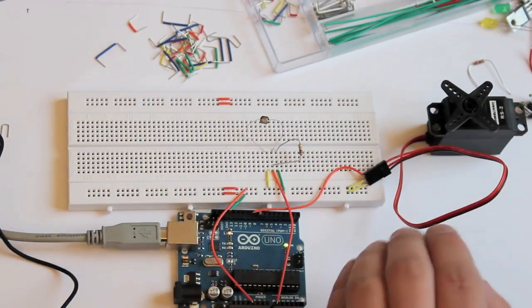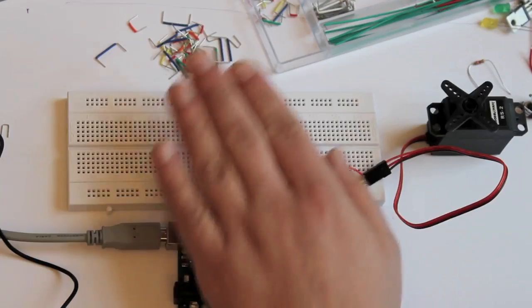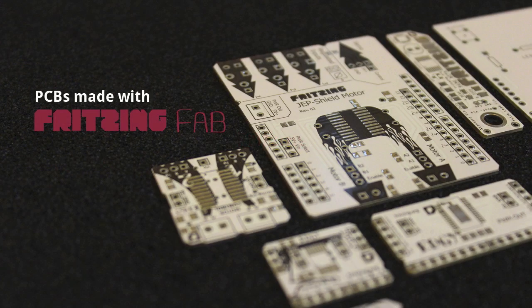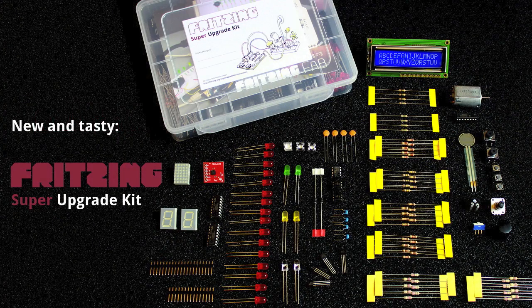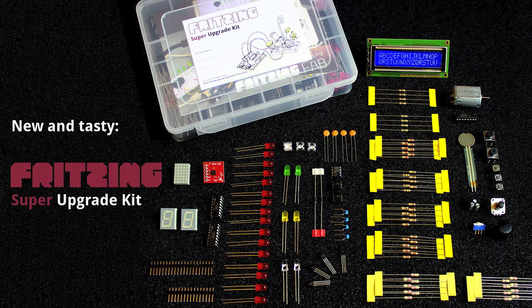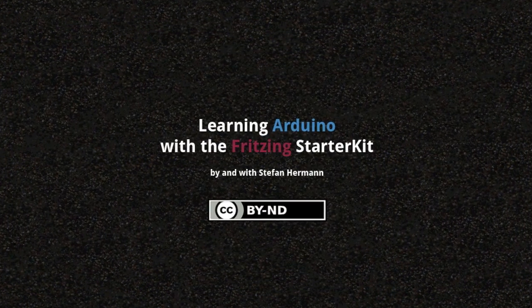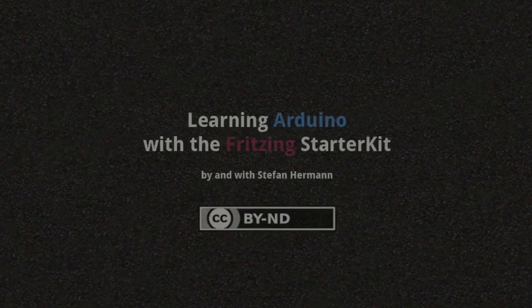This episode was brought to you by fritzing.org, the free and open software for project documentation, sharing, and PCB layout creation. Check out our PCB fabrication service, Fritzing Fab. With the purchase of Fritzing products, you actively support the development of the Fritzing software. For more Arduino related questions, go to arduino.cc, arduino.cc/forum. Thanks for watching.